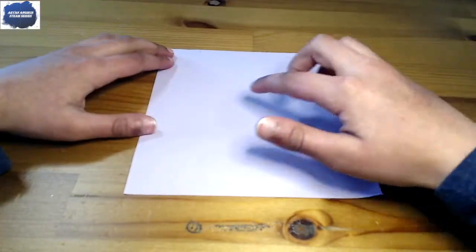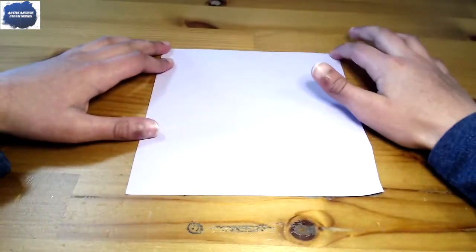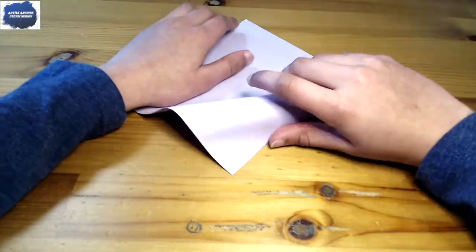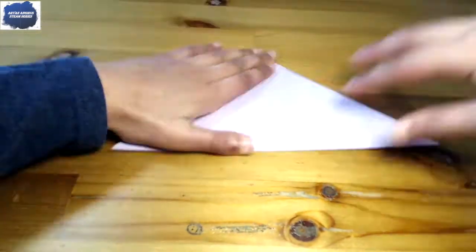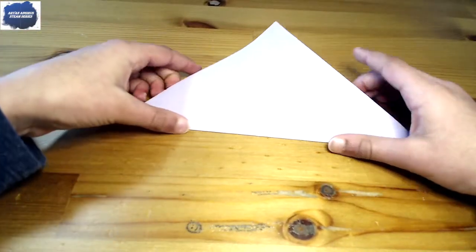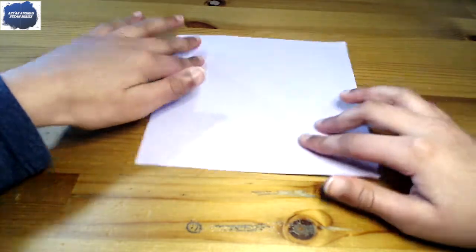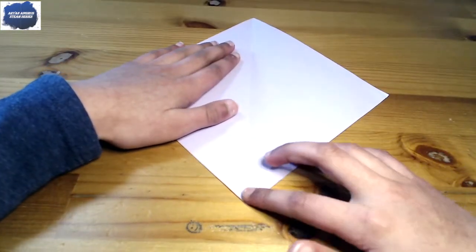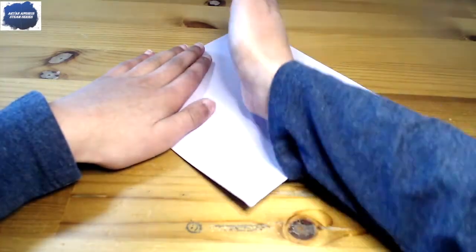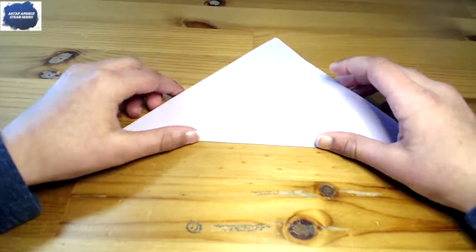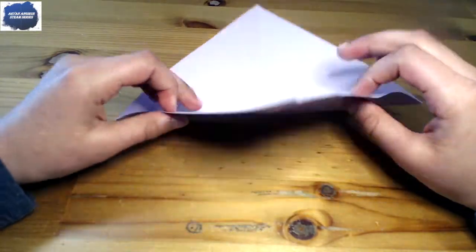So, first, let's bring this corner to this corner. Okay, there. Now, unfold. Now, bring this corner to this corner. Make sure the fold that you just made is going vertically. There. Now, unfold like that.